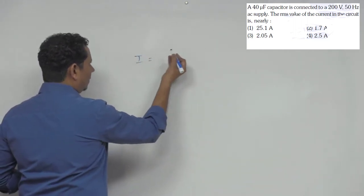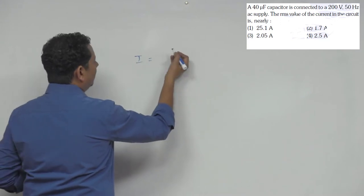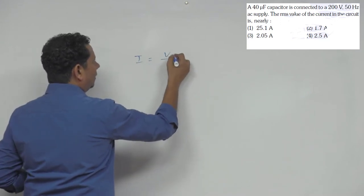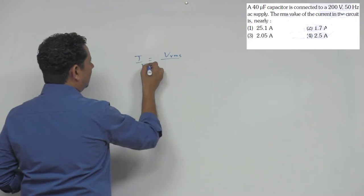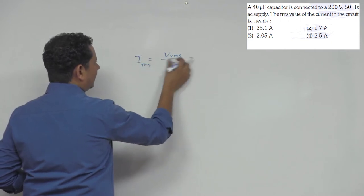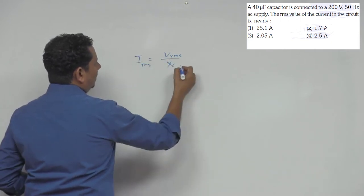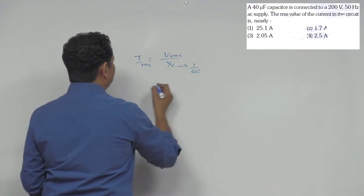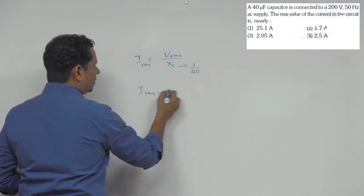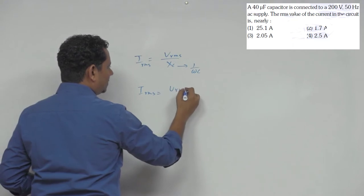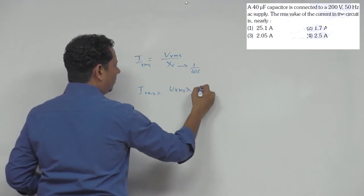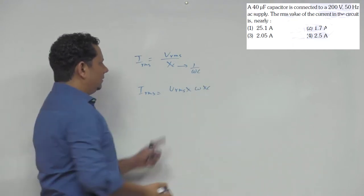Current ki value hum likh sakte hai, this will be equal to V_rms divided by Xc. Or Xc ko hum yaha likh sakte hai, this will be equal to 1 by omega C. So aapka I_rms jo hai uski value hogi V_rms multiplied by omega multiplied by C. Yeh sara